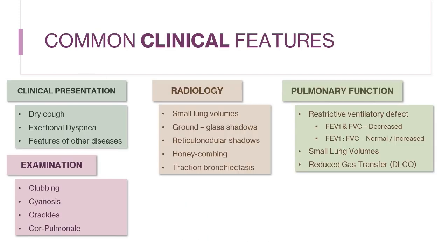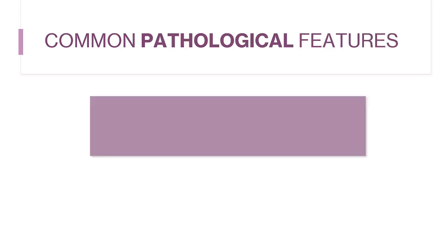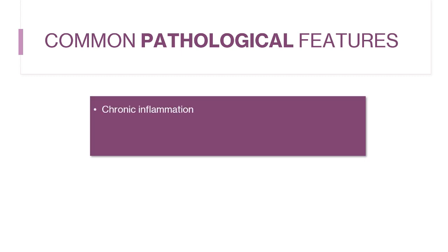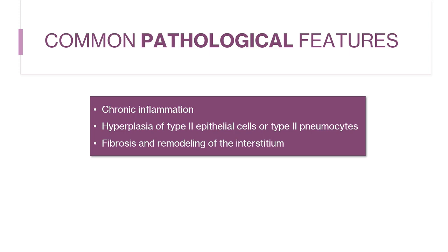This is the summary of common clinical features in diffuse parenchymal lung diseases. Common pathological features in DPLD include the presence of chronic inflammation, hyperplasia of type 2 pneumocytes, and in advanced disease, fibrosis and remodeling of the interstitium.